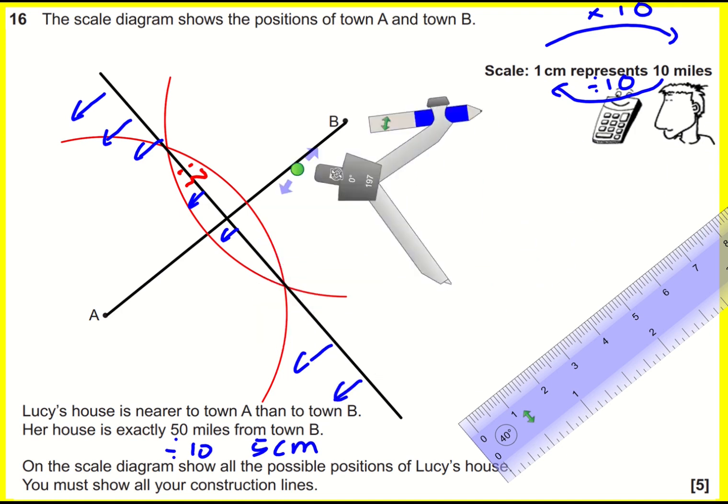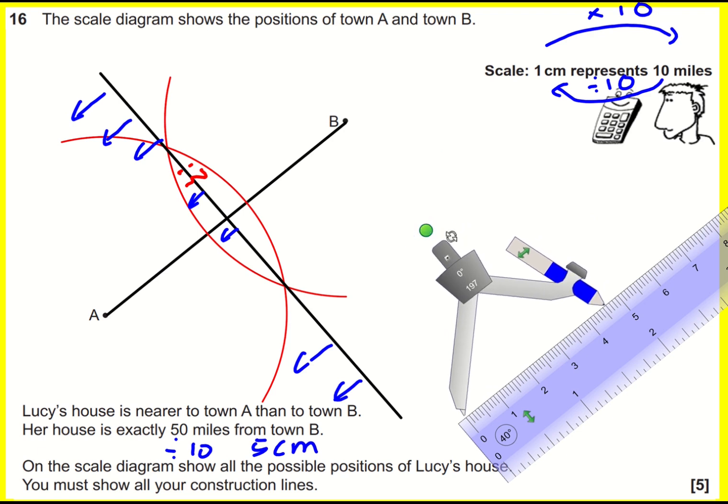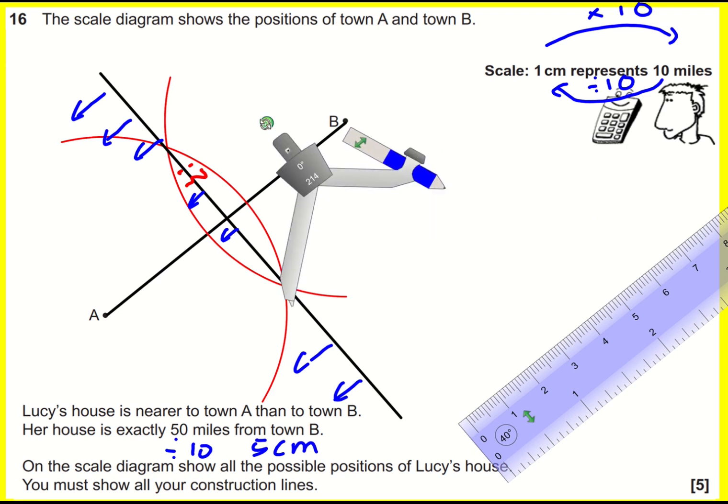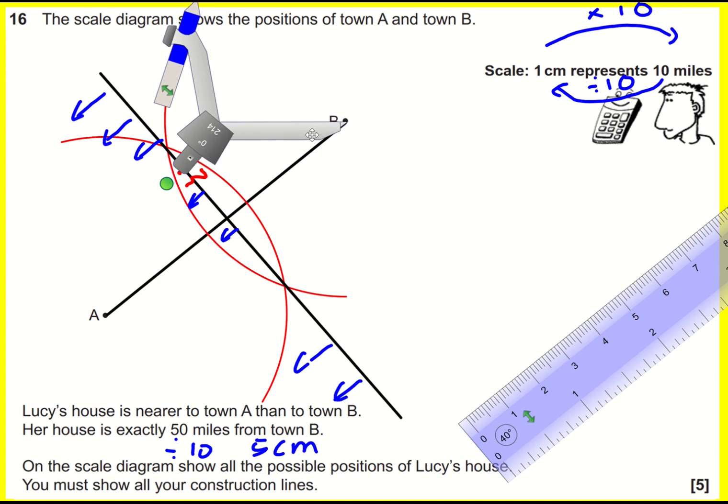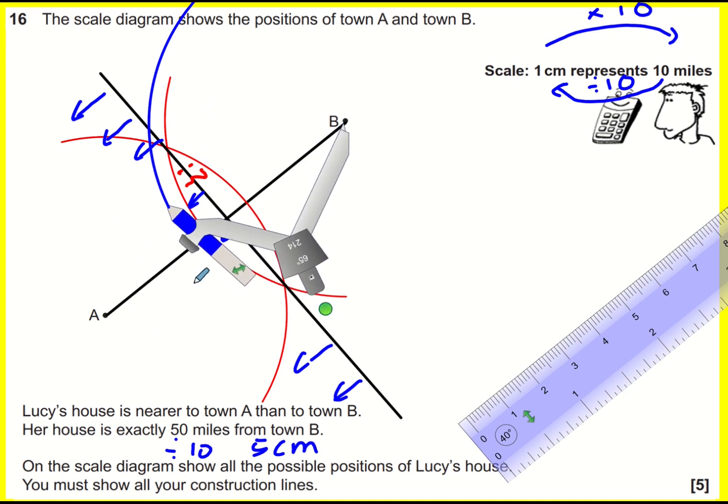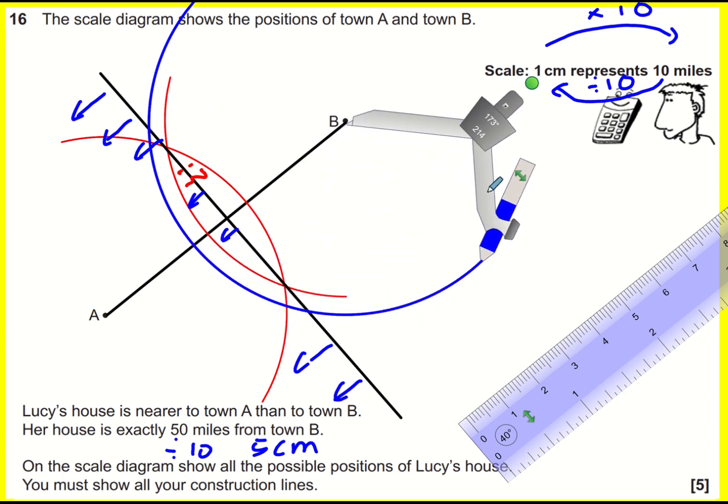So now I'm going to get my compass at exactly 5 centimeters. It was close to that before, but not quite. And then I'm going to put the point back on B. And all of these points here will be 5 centimeters from B. And this actually gives the line. So it has to be below this bisector, and it has to be on this line. So it's going to be all of these points here.